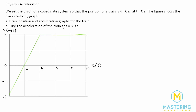Welcome to Mastering Solutions. In this problem they want us to take this velocity versus time graph and then from that we need to draw a position and an acceleration versus time graph. Then for part b they want us to figure out what the acceleration is at three seconds.